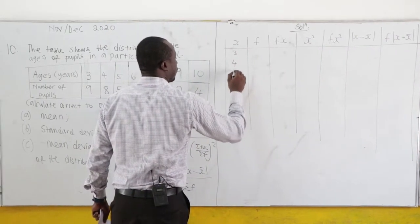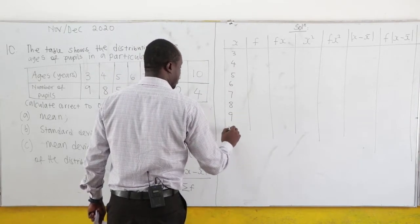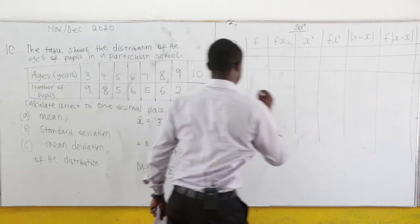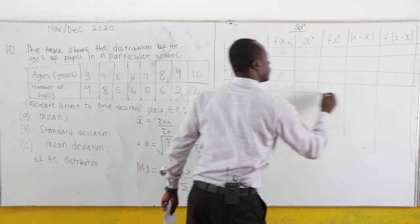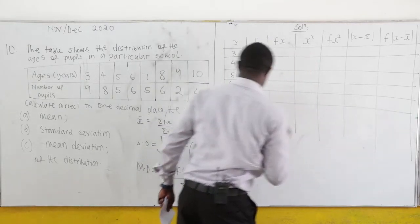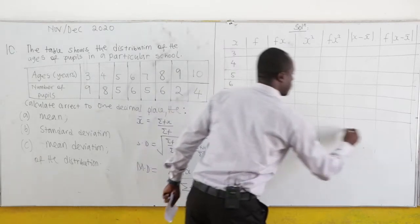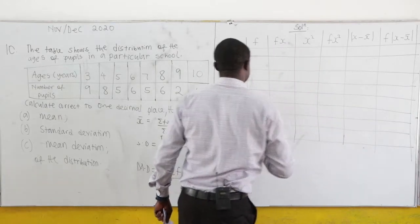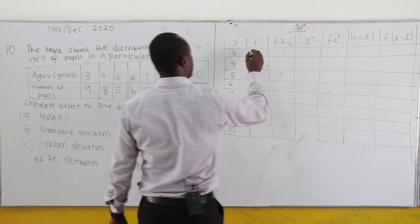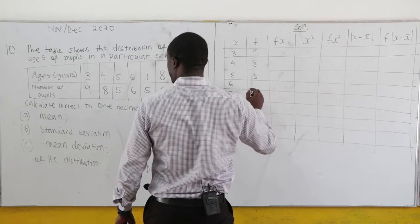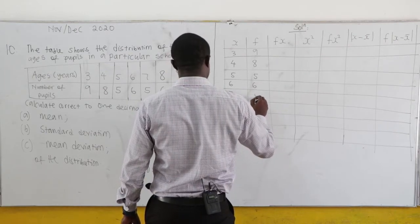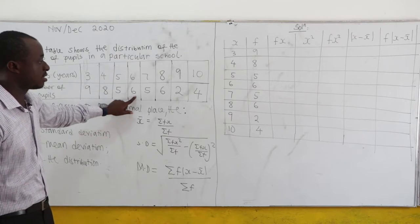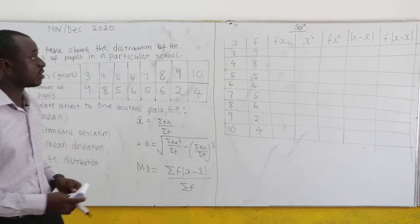The ages run from 3 to 10, so we have: 3, 4, 5, 6, 7, 8, 9, 10. The corresponding frequencies are: 9, 8, 5, 6, 5, 6, 2, 4.